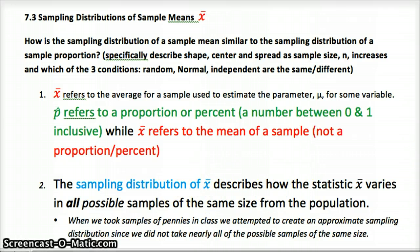In the same way, sampling distribution of x bar describes how the statistic x bar, remember that's the average of one sample, the mean of one sample, how it varies in all possible samples of the same size from the population.